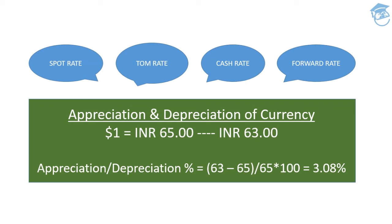Forward rate is the rate quoted for transactions that will be settled beyond two days from the date of contract, at a mutually agreed rate — T plus N number of days. So to summarize: spot rate is T+2, tom rate is T+1, cash rate is T+0, and forward rate is T+N days.